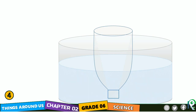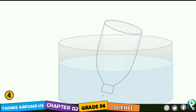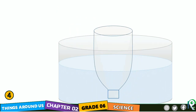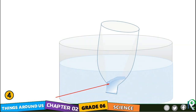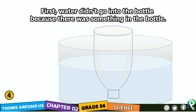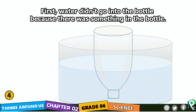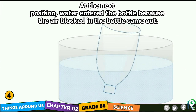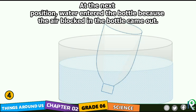Tilt the bottle as shown in the next figure and observe what is happening. Bubbles are coming out! When the bottle is in the first position, water doesn't enter the bottle. But when the bottle is tilted, bubbles come out and water enters the bottle. Water didn't go in at first because something was already in the bottle. At the next position, water entered because the air blocked in the bottle came out. So it's clear that air was occupying the space.